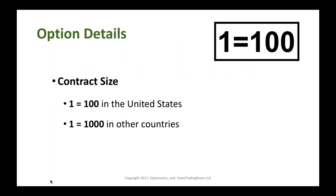Contract size: one option contract equals 100 shares of stock in the United States. In a couple of other countries, one contract equals 1,000 shares, but that's because their stocks trade for $5 or $3 a share — the only way to get true leverage on a stock under $10 is if your contract covers more than 100 shares.